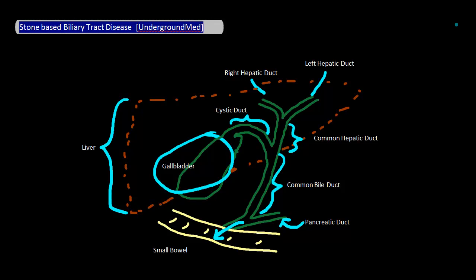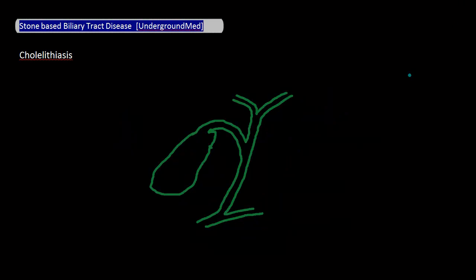Now that we've reviewed the biliary anatomy, let's get to the main course, starting with cholelithiasis. Cholelithiasis is pretty much what it sounds like—it means that you have stones, or lithiasis, in your gallbladder, chole.